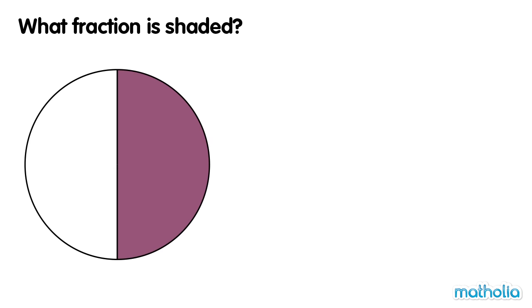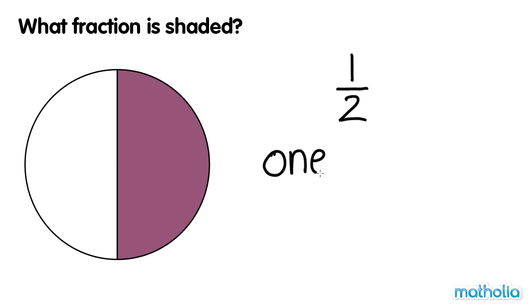What fraction is shaded? The circle is divided into two equal parts. One part is shaded. One half of the circle is shaded. One half.